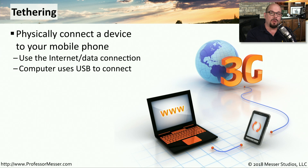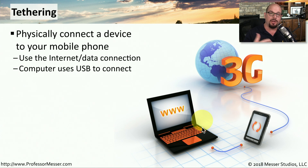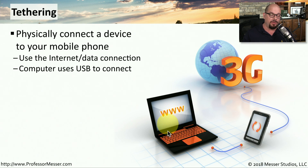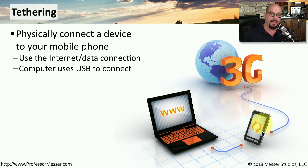Many of our mobile devices allow us to use tethering to get internet access. We would connect our mobile phone directly to our computer, usually over a USB connection, and that would allow us to use the phone as a method to communicate to the internet. So this computer being directly tied to this phone would then have the same access to the internet as your phone normally has.